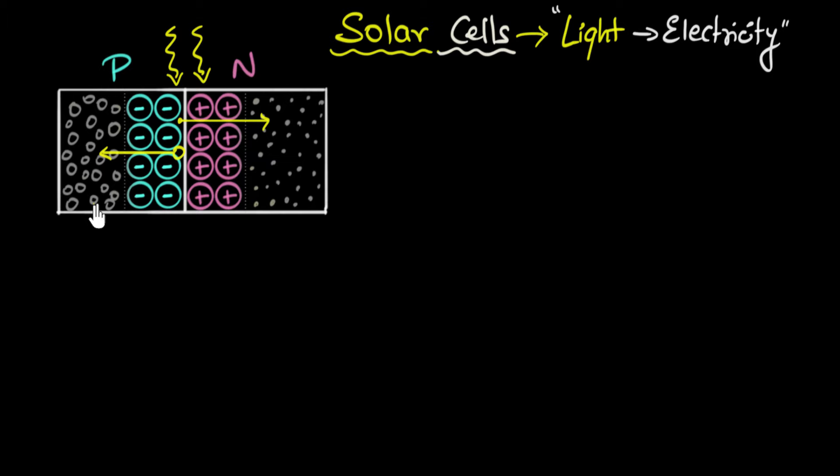As a result, we have electrons being accumulated on the n side, causing a negative charge there, while holes accumulate on the p side, causing a positive charge. As a result, a potential difference is created. This is how solar cells convert light into voltage — the photovoltaic effect.